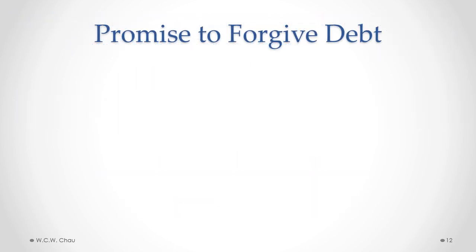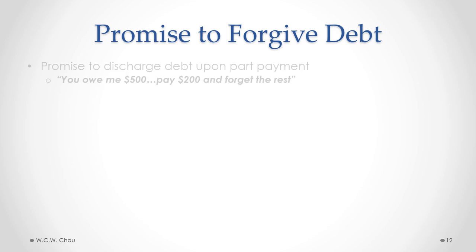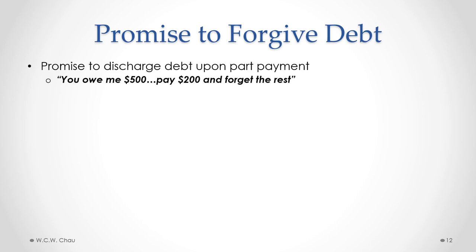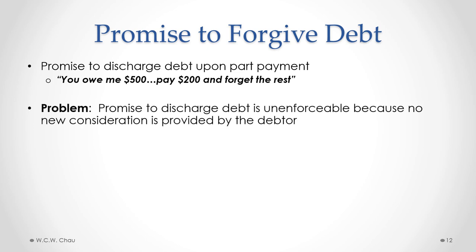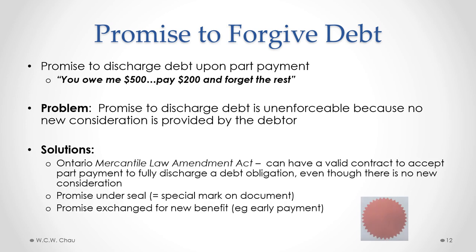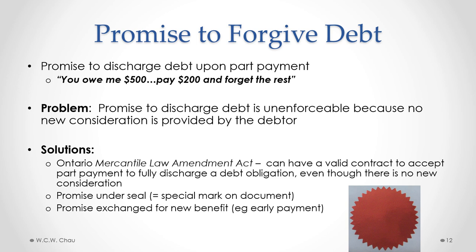The situation involving a promise to forgive debt also raises a consideration issue. For example, if you owe me $500 and you say you'll have difficulty paying since you lost your job, and I agree to forgive your debt if you pay me $200, that is a promise to discharge debt upon part payment. The legal problem is that the promise to discharge a debt is unenforceable because no new consideration is being provided by the debtor. In effect, I am discharging $300 of your debt in exchange for nothing — there is no exchange of consideration. If the situation occurs in Ontario, there is legislation called the Ontario Mercantile Law Amendment Act.